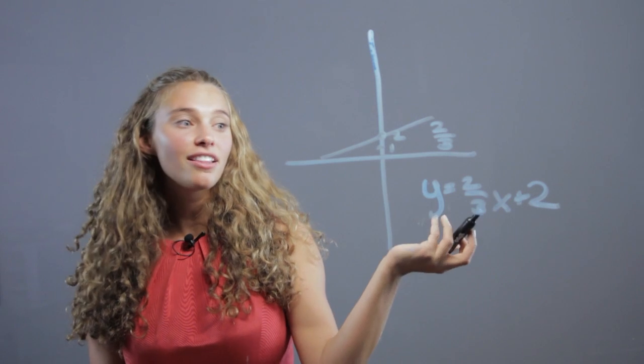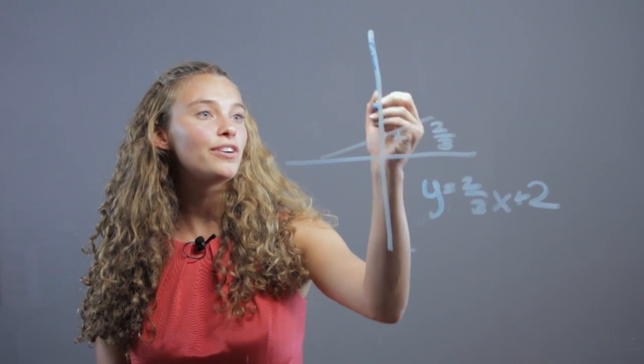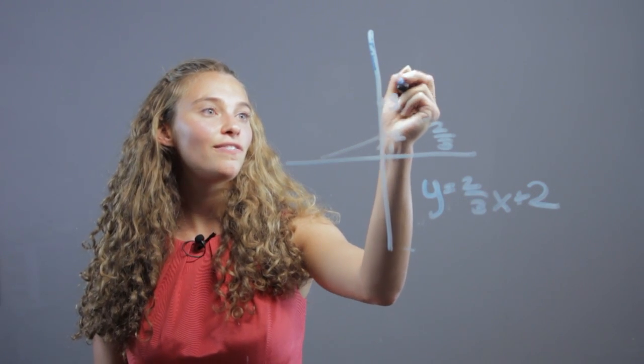So, the equation of any parallel line will have the same slope, so you could do, say this is 5.